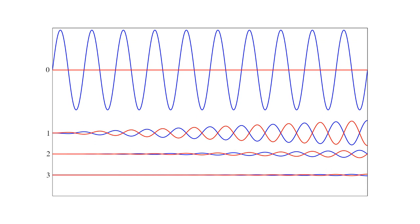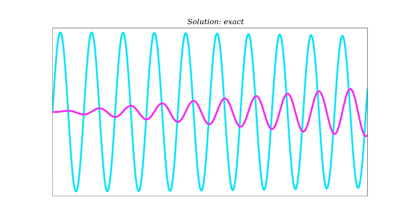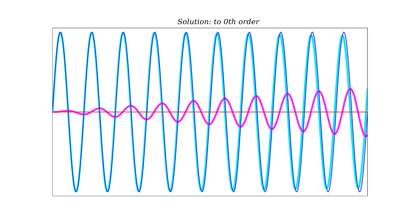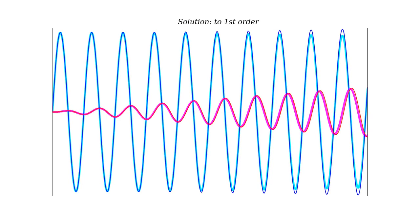For our two-mass problem, here is a graph of the zeroth-order solution and the first three corrections. The corrections rapidly decrease in amplitude, telling us that with only a few corrections, we will obtain a very accurate approximation to the exact solution. Here's the exact solution. The thick cyan line is X1 of T, and the thick magenta line is X2 of T. The thin blue and red lines show the zeroth-order solution. Adding the first-order correction, our approximate solution improves dramatically. Adding the second-order correction, the agreement is even better. And adding the third-order correction, our approximate solution is essentially indistinguishable from the exact solution.